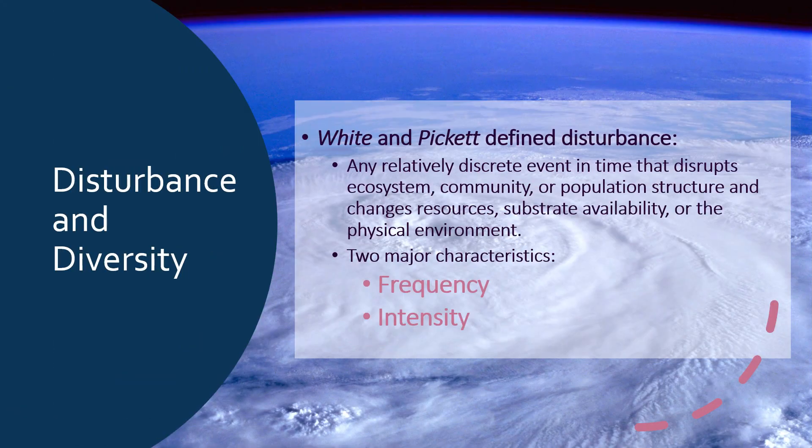White and Pickett define disturbance as a relatively discrete event — something that happens with a sort of beginning in time — that disrupts the ecosystem, the community, or the population structure. It can change resources, substrate availability, or in some way change the physical environment.